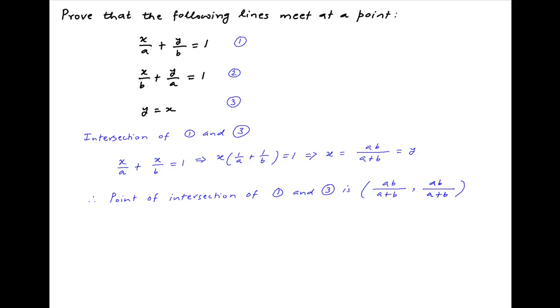Now to verify if this point lies on the second line as well, we substitute x = ab/(a+b) and y = ab/(a+b) in the left-hand side of equation 2.